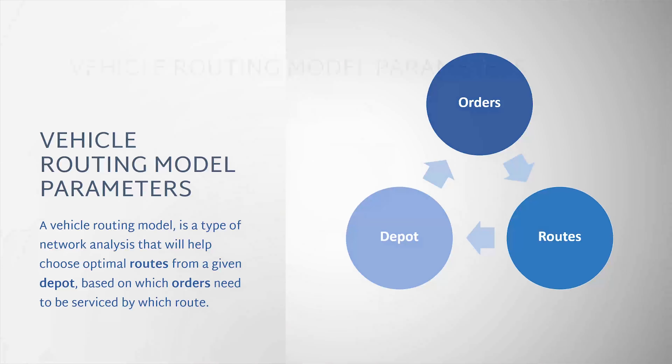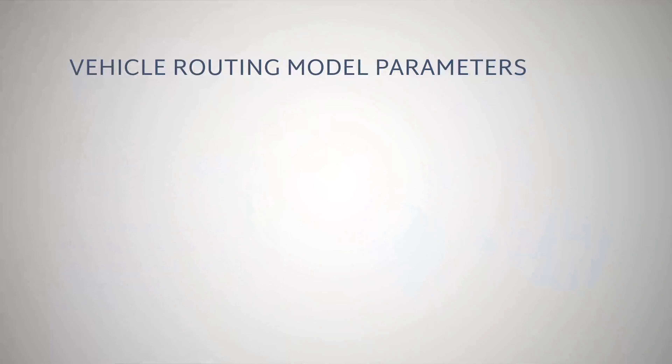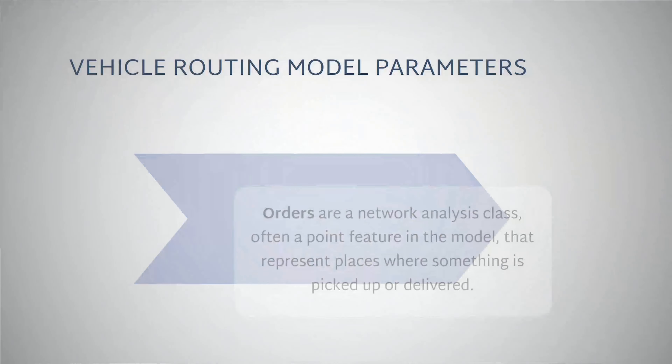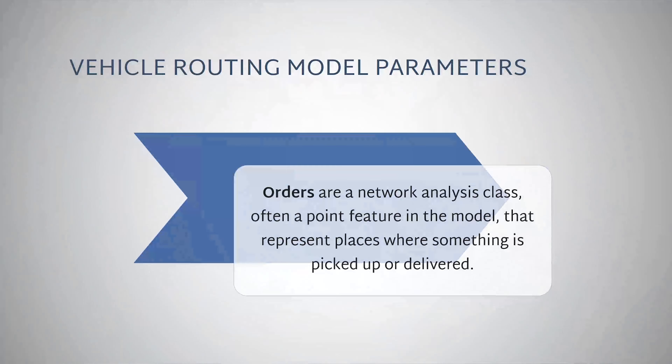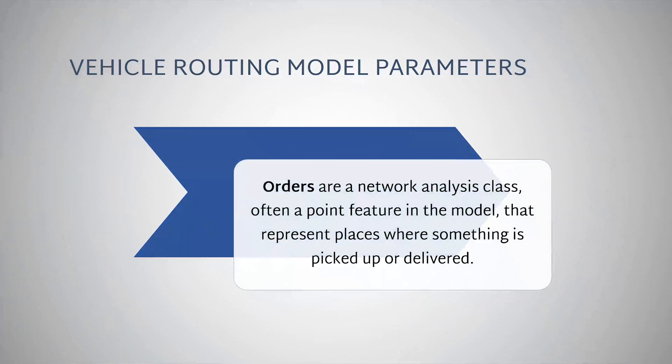Orders are a network analysis class, often a point feature in the model, that represent places where something is picked up or delivered. Orders could have attributes such as volume and weight.